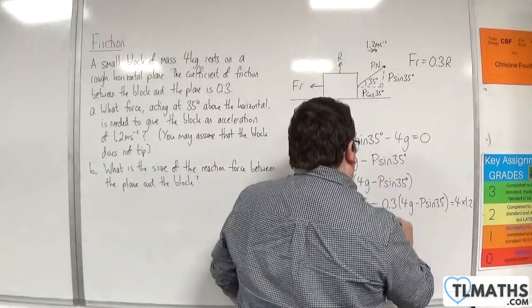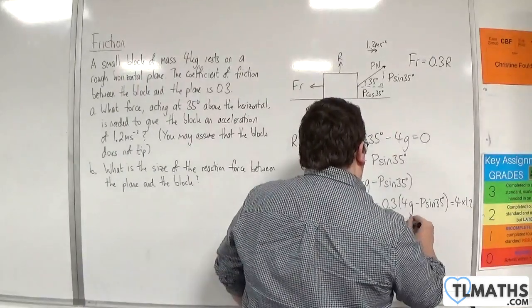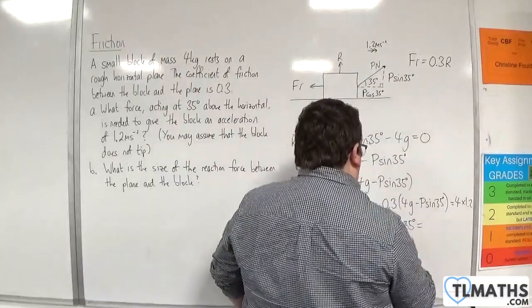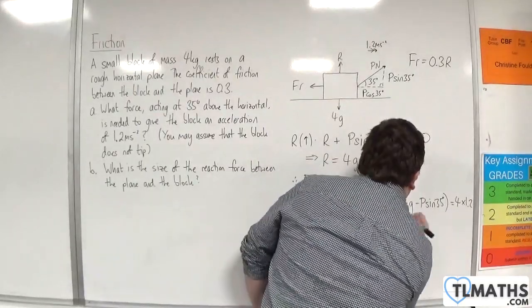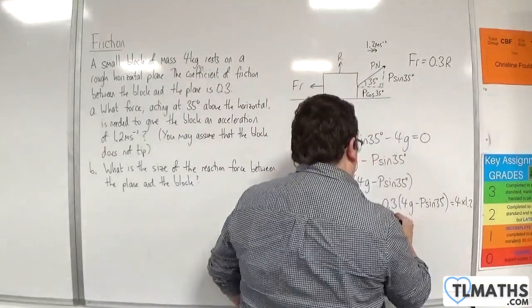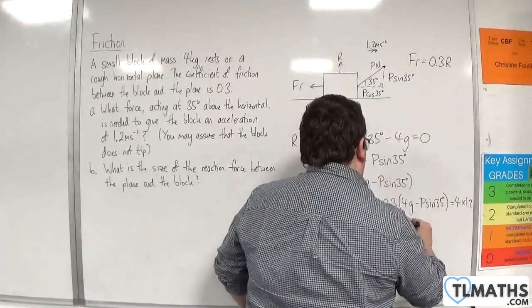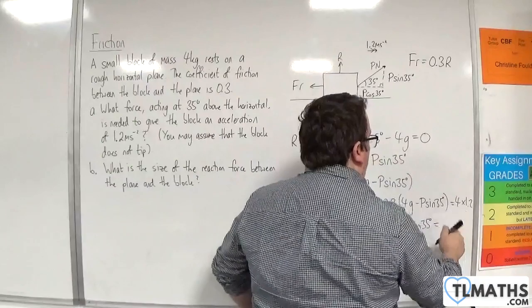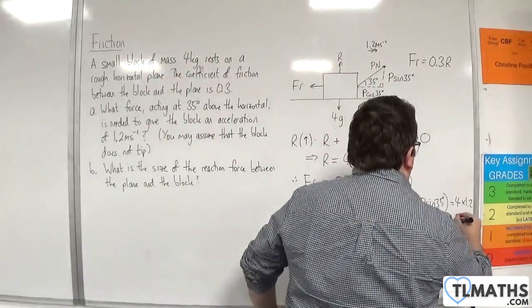Then I'm going to have plus 0.3 P sin 35 is equal to 4 times 1.2, which is 4.8.